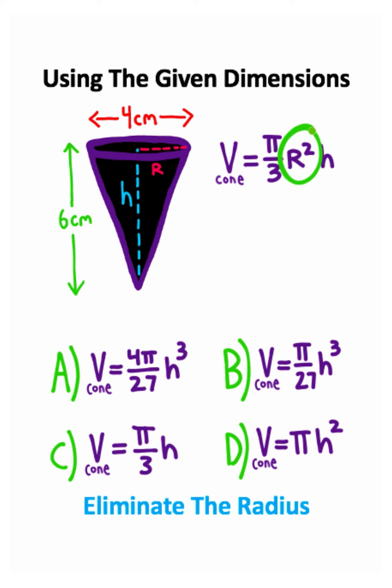So I'm basically trying to get the radius to disappear in this equation with the dimensions that I'm given of this cone. I'm going to create a ratio between the height and the radius.